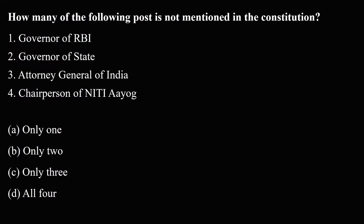The second question: How many of the following posts are not mentioned in the constitution? The options are: Governor of RBI, Governor of State, Attorney General of India, and Chairperson of Niti Aayog. Governor of State and Attorney General of India are constitutional posts, while Governor of RBI and Chairperson of Niti Aayog are not constitutional posts. Eliminating those, the answer is only two.